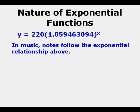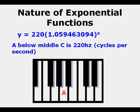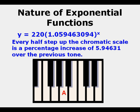Now we have another function, y equals 220 times 1.059, etc., to the power of x. Notes follow that exponential relationship. A below middle C is defined as 220 Hz or cycles per second. Every half step up the chromatic scale is a percentage increase of 5.94631 over the previous tone.